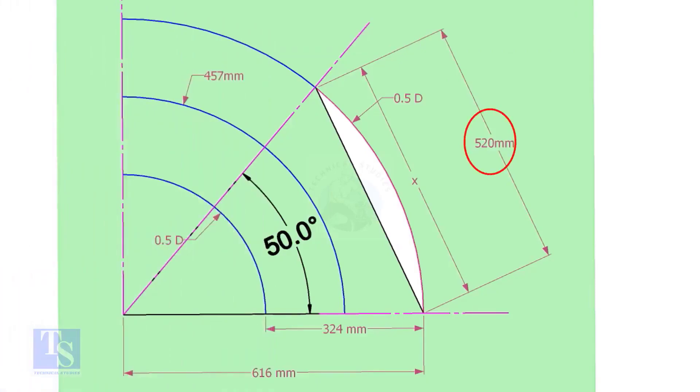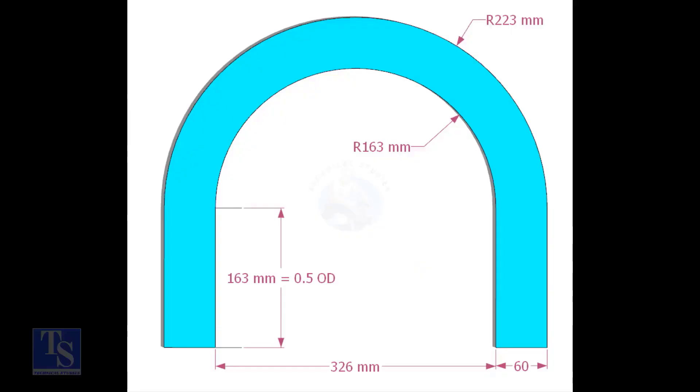Mark the arc in the 50-degree line as shown. Cut a plate as shown. The thickness shall be 6mm or 8mm. The radius and the height shall be 1mm more than the actual radius of the elbow.